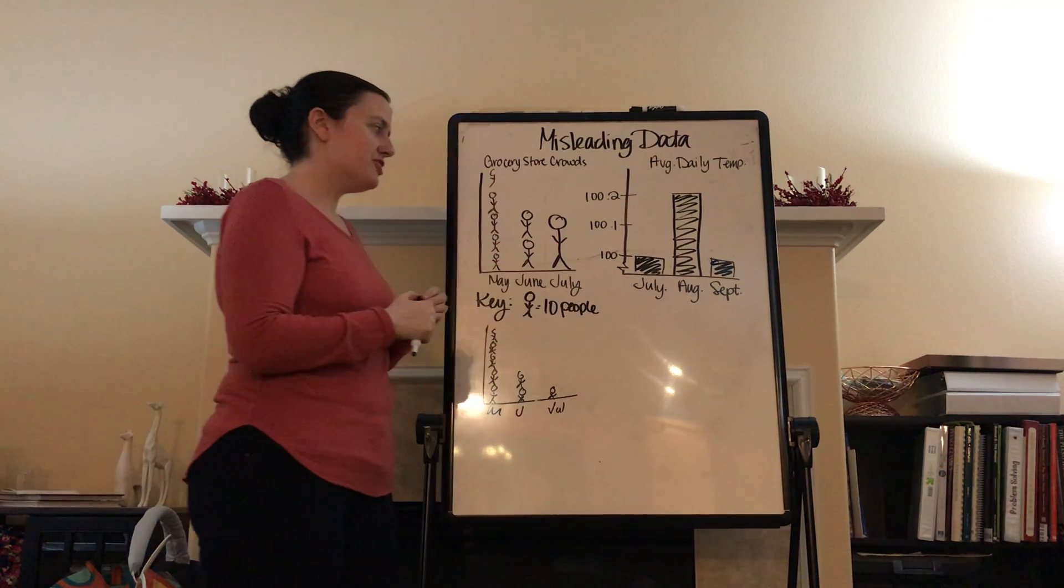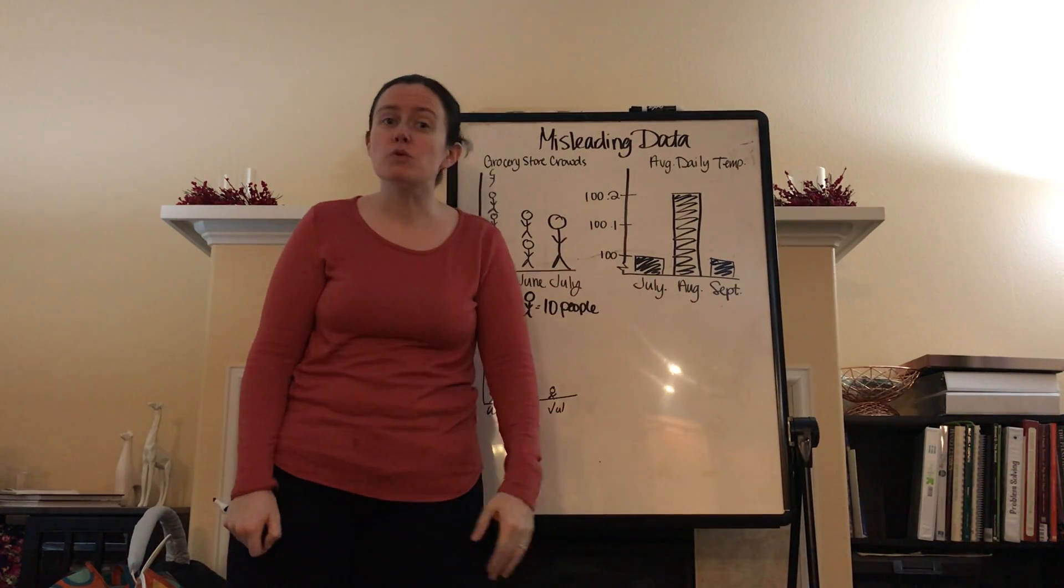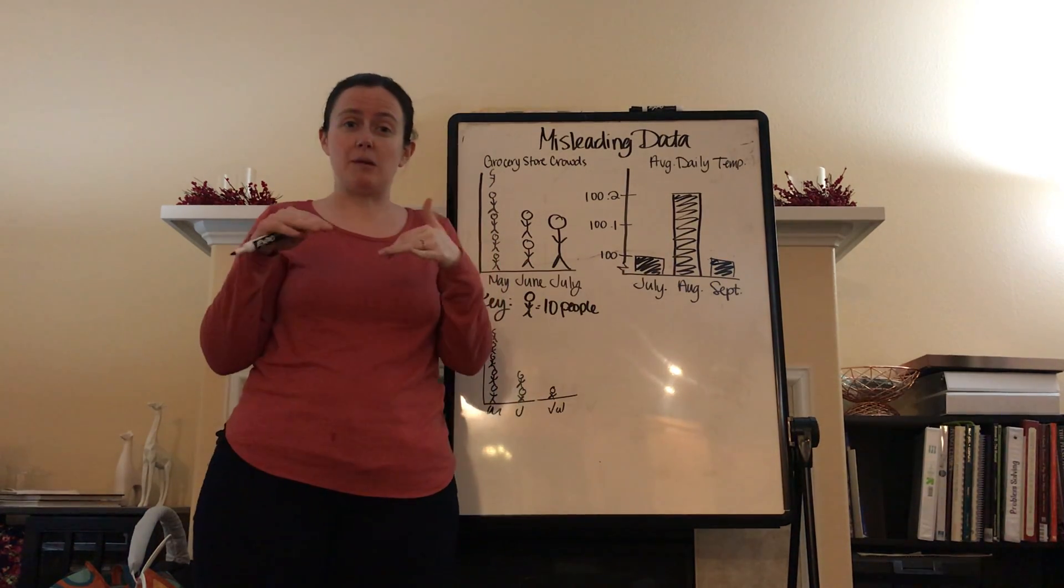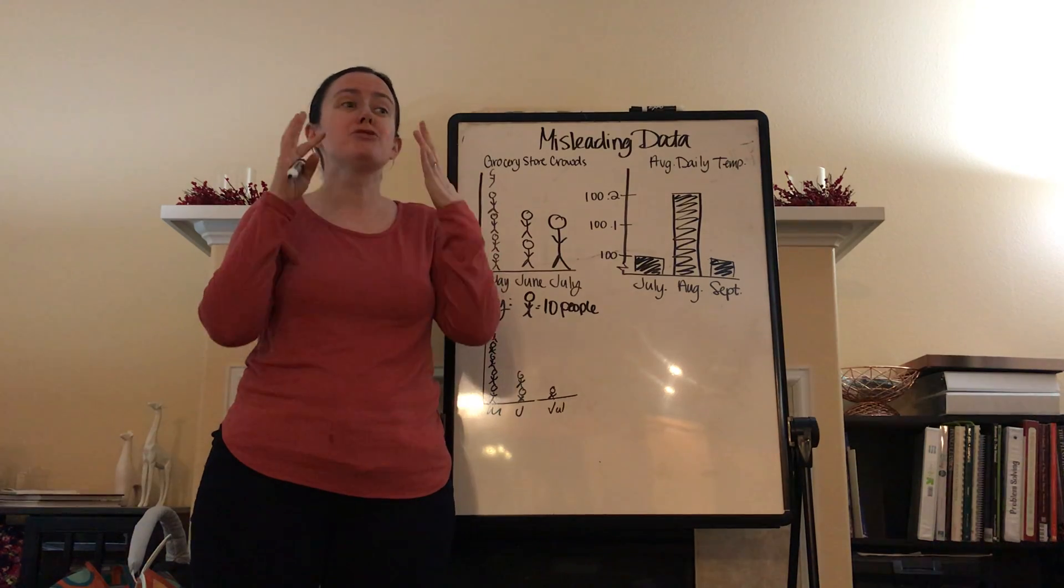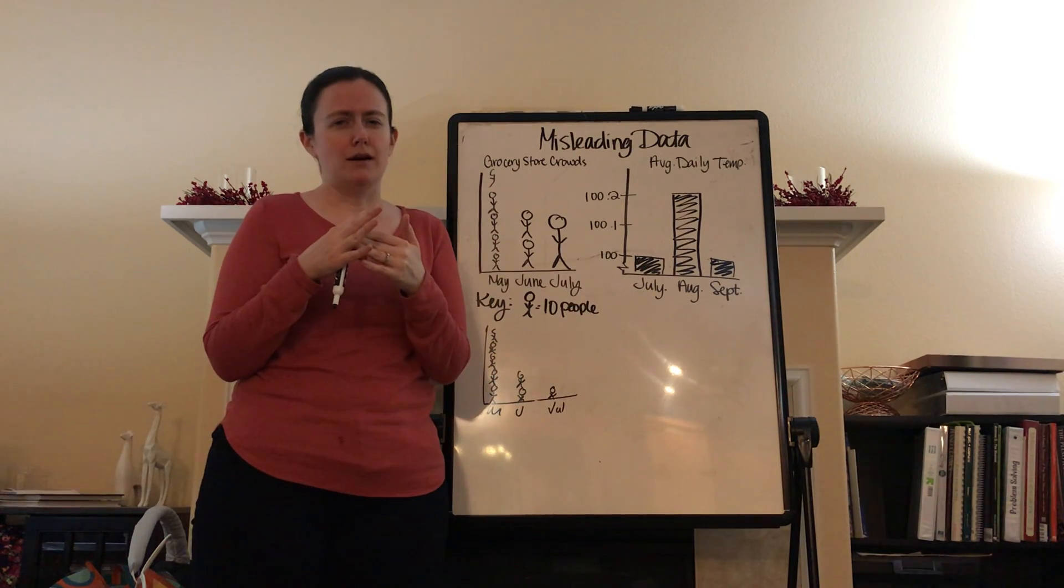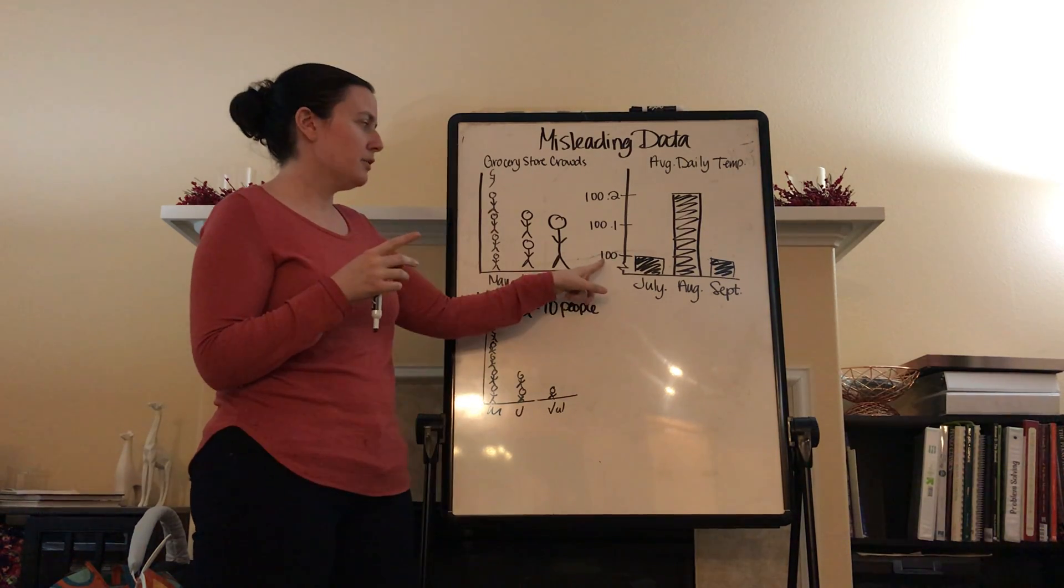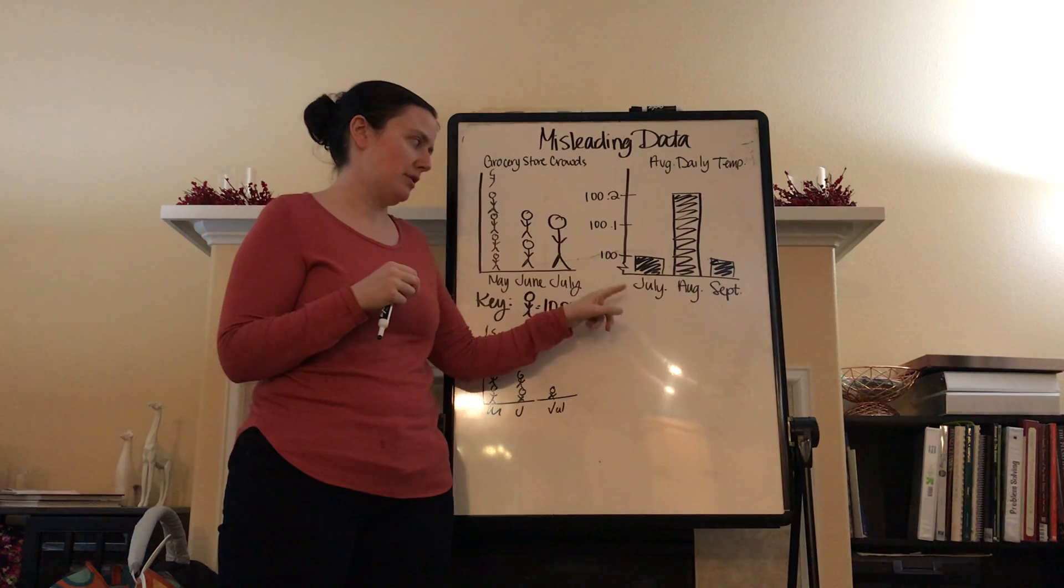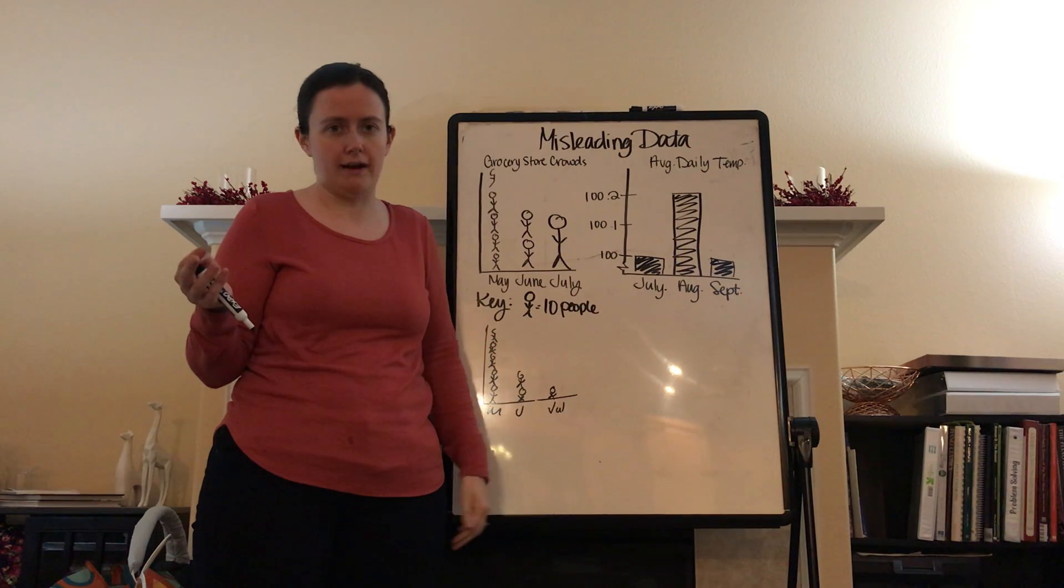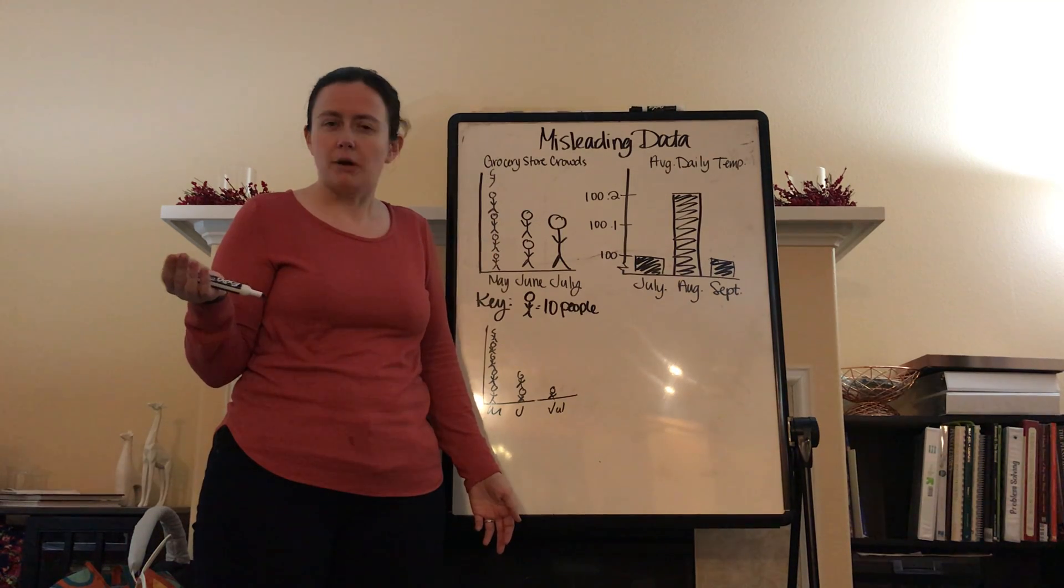Next thing I want to talk about is the average daily temperature. Oh. My. Gosh. So, average daily temperature for July, August, and September. August was so incredibly hot. It was way hotter than July and September. July and September, they were the same temperature, but August was so much hotter. Look how much higher that bar is. Whoa. Stop, time, pause. Was it really that much hotter? Not much hotter. Look. What was the temperature? It was 100 degrees in July and September, on average. Look at the temperature. One hundred and two tenths degrees. It wasn't even a whole degree hotter, on average. Two tenths. Do you think you even feel two tenths of a degree?